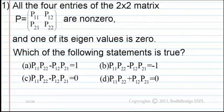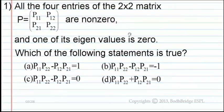All the four entries of the 2 by 2 matrix P equals P11, P12, P21 and P22 are non-zero, and one of its eigenvalues is 0.